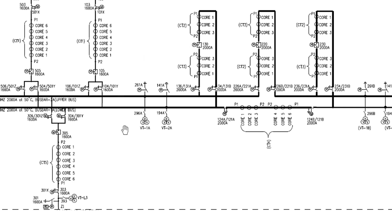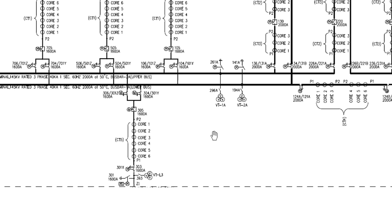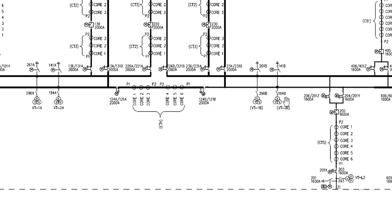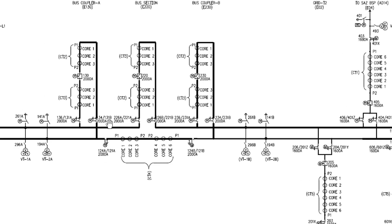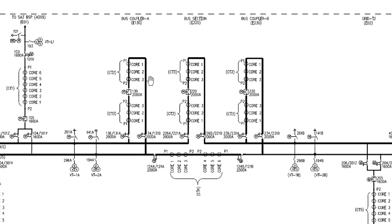There are VTs on the bus bar as well. These bus bar VTs can be used for synchronizing purposes from either side. Bus sections and bus couplers serve the purpose of managing loads during maintenance periods, load shedding, or load management according to load requirements. This setup gives the operational and maintenance team the flexibility to shift and manage loads under normal or abnormal conditions.